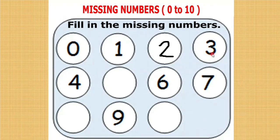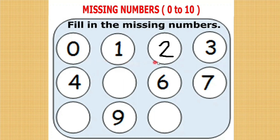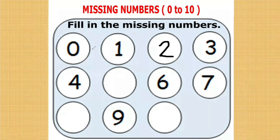After 2, 3 is there. After 3, 4 is there. After 4, the number is missing. What comes after 4? To do this, keep 4 in your mind and do the forward counting from 0. 0, 1, 2, 3, 4, 5. What comes after 4? 5. Let us write 5.